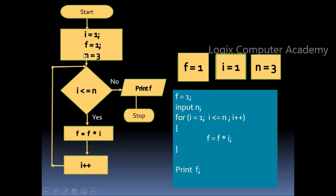Another variable called f is again initialized with 1. Let's take it for granted that the user has input 3 in n. The first thing we need to check is whether i is less than or equal to n. f and i will be multiplied and again assigned to f. Here we show these three variables: f is equal to 1, i is equal to 1, i is less than n. So f and i will be multiplied and the value will be assigned to f.